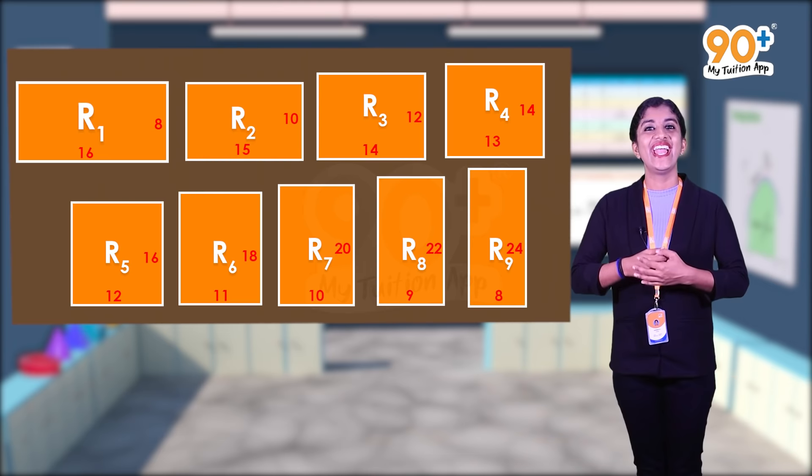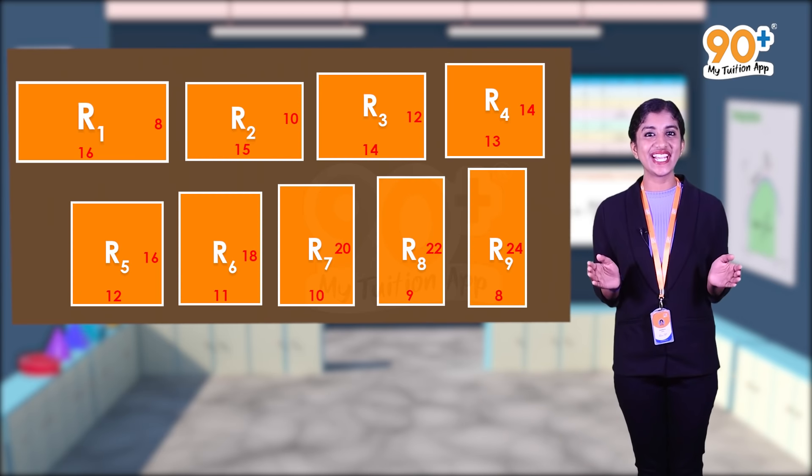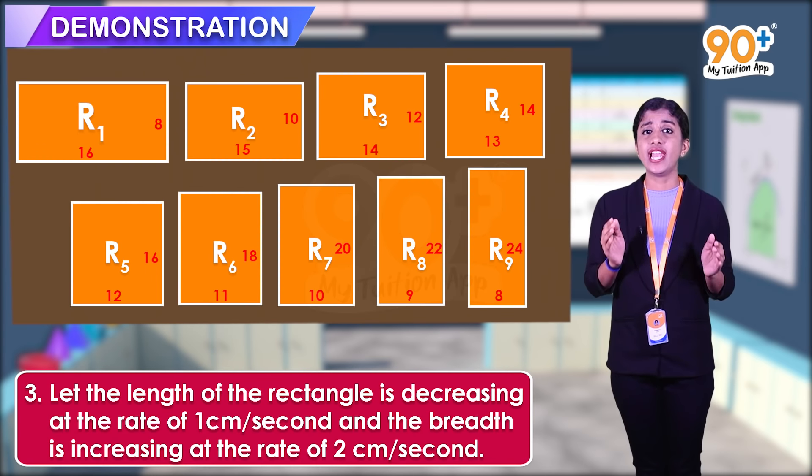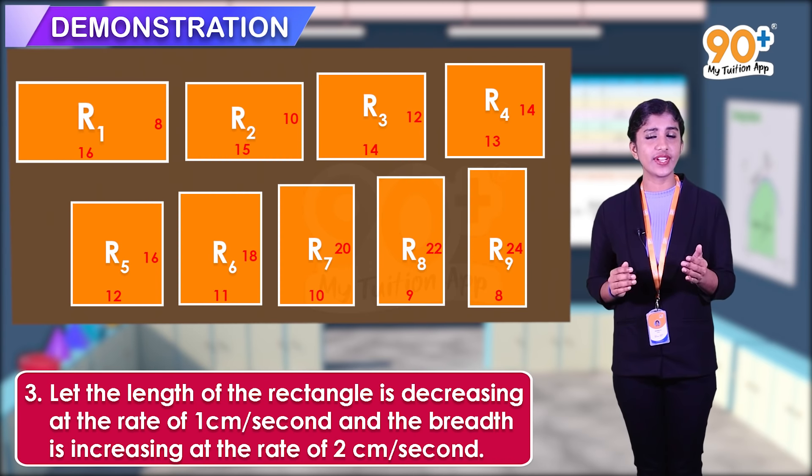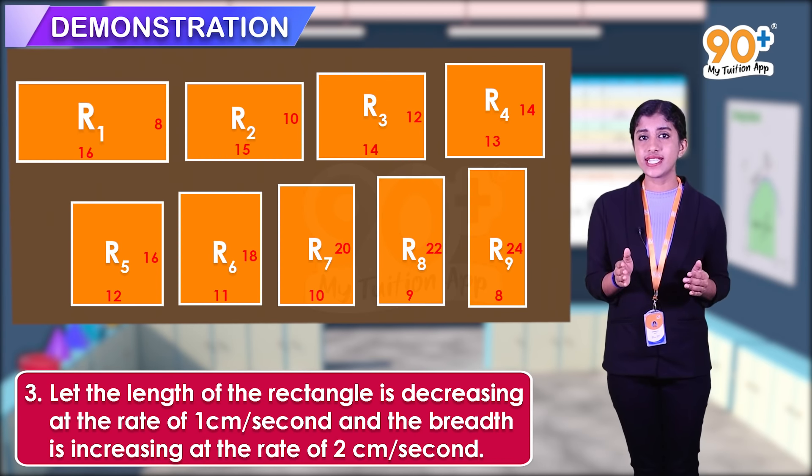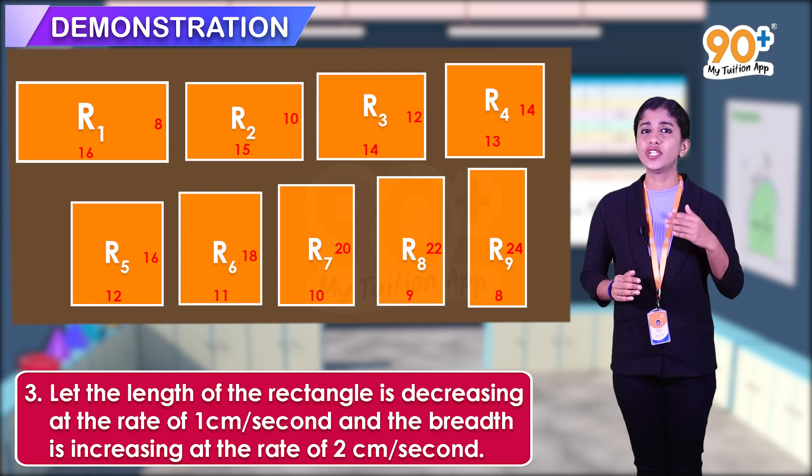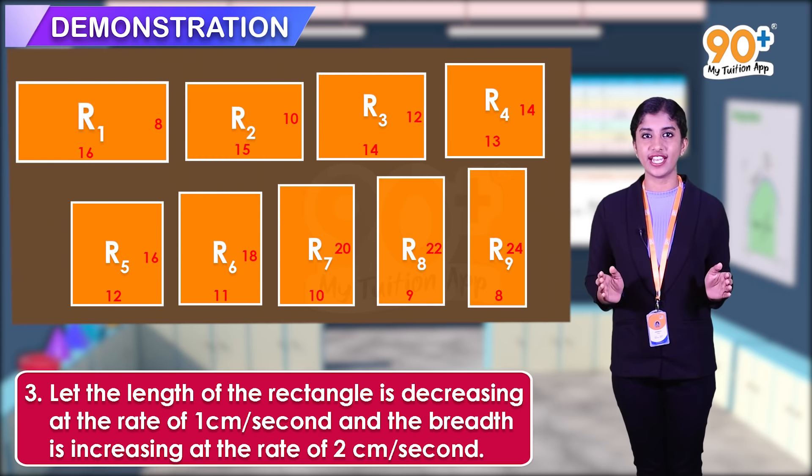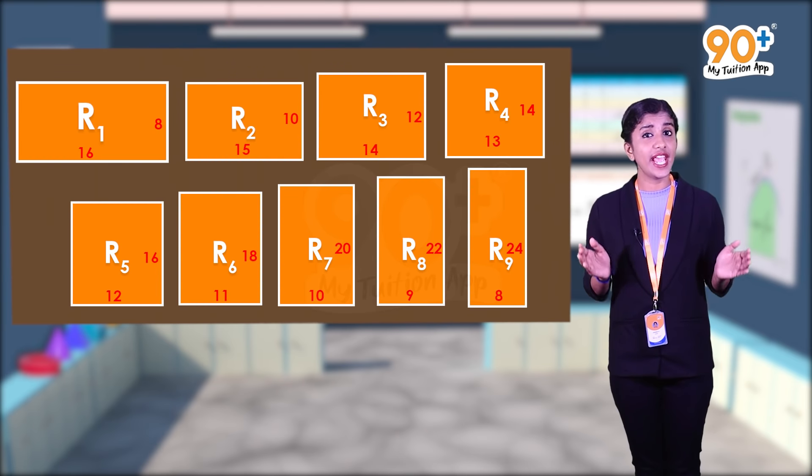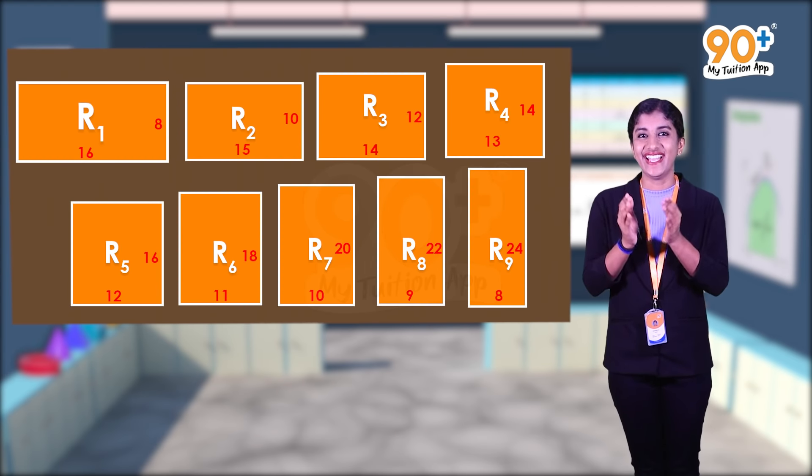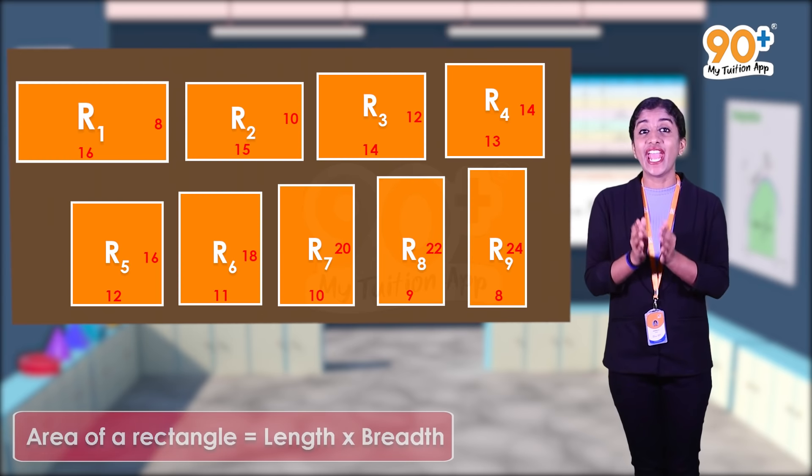Now let's move on to the next step, that is demonstration. The length of the rectangle is decreasing at the rate of 1 centimeter per second and the breadth is increasing at the rate of 2 centimeters per second. We need to find the area of the rectangle. What is the area of rectangle? Yes, very good. Area of rectangle is equal to length into breadth.